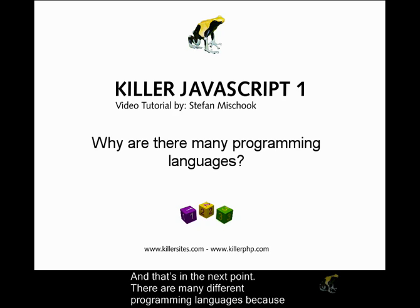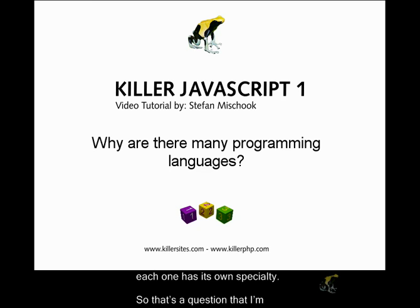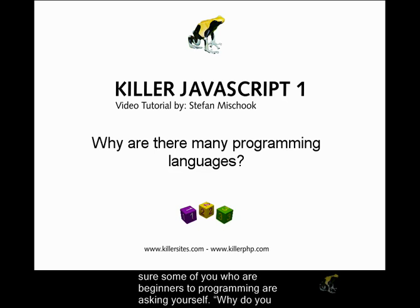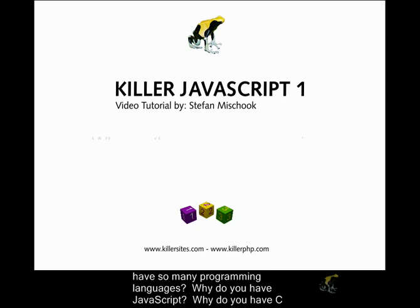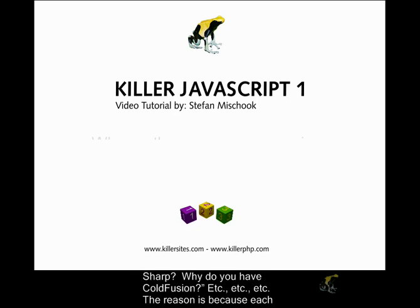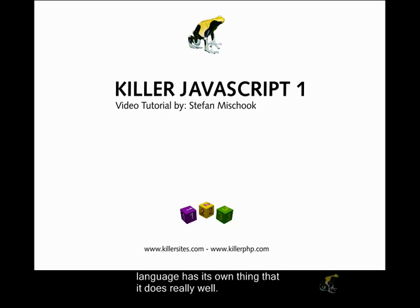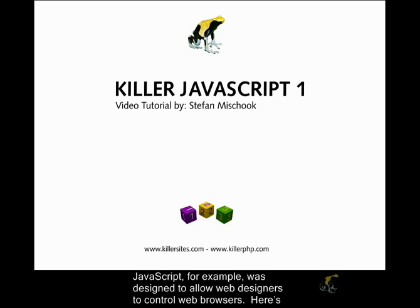There are many different programming languages because each one has its own specialty. That's a question beginners often ask: why do you have so many programming languages? Why JavaScript? Why C-sharp? Why ColdFusion? The reason is because each language has its own thing that it does really well. JavaScript, for example, was designed to allow web designers to control web browsers.